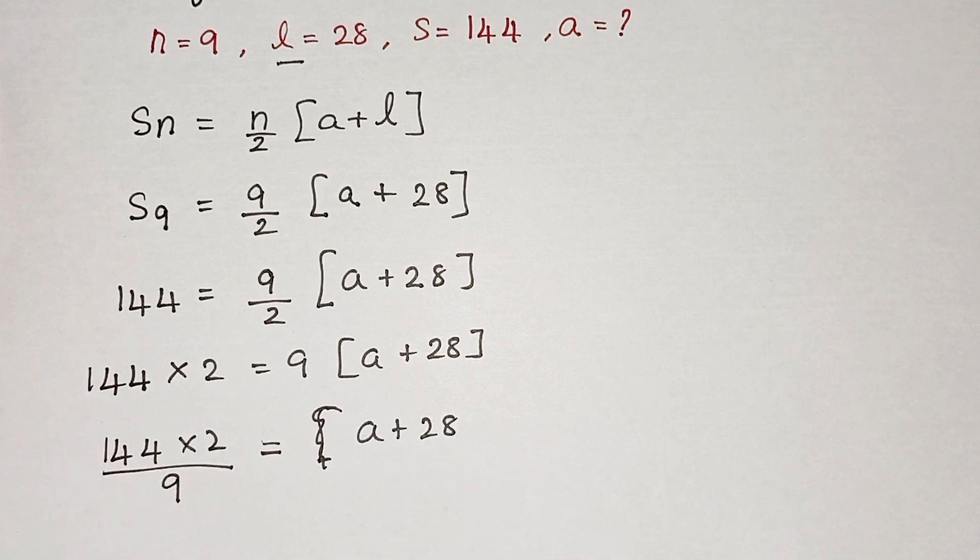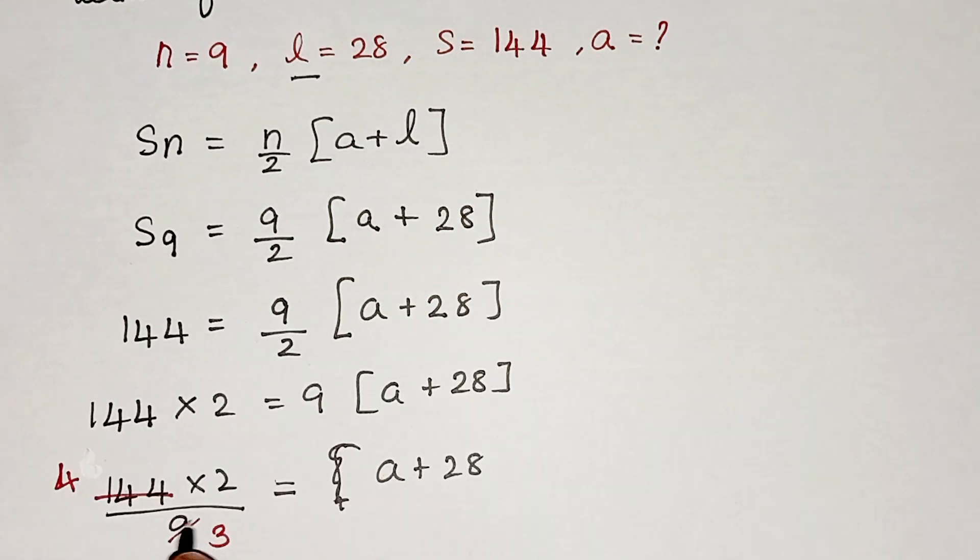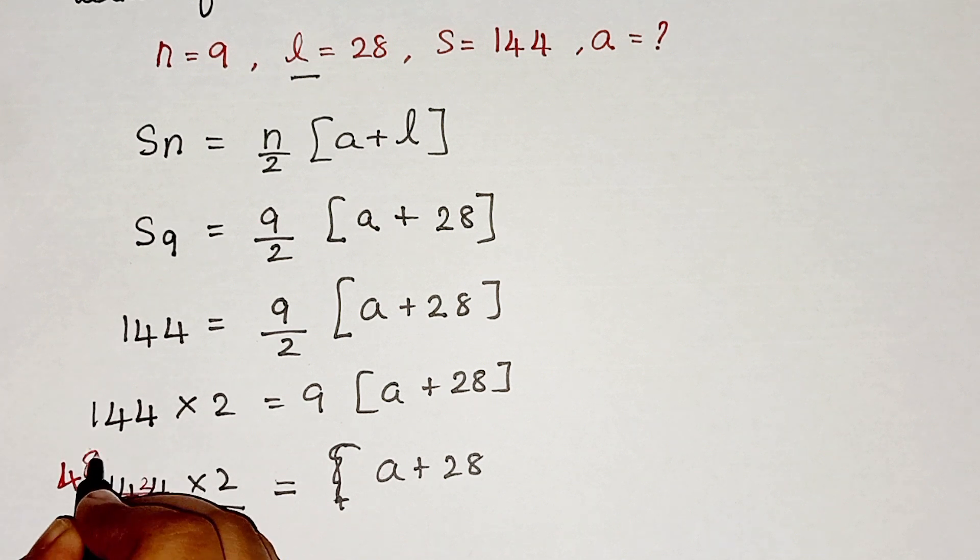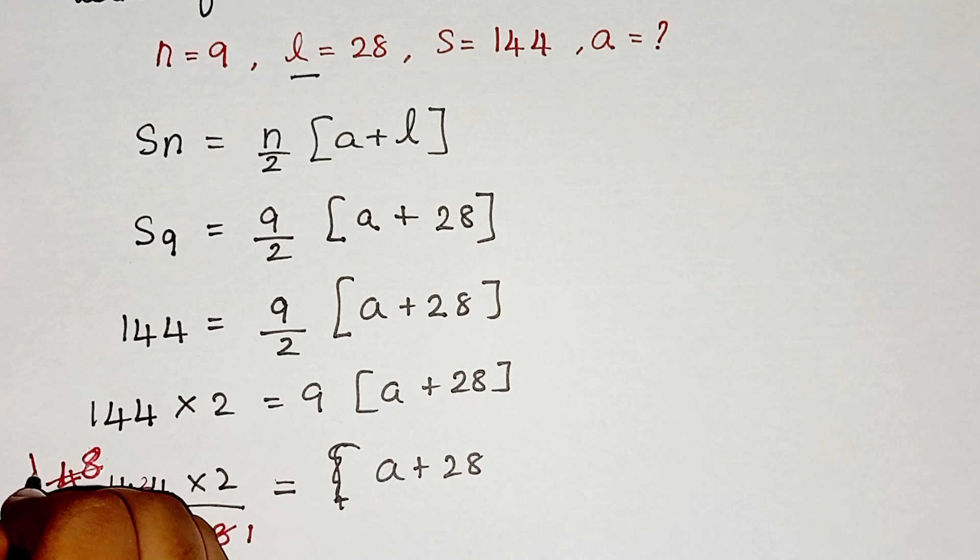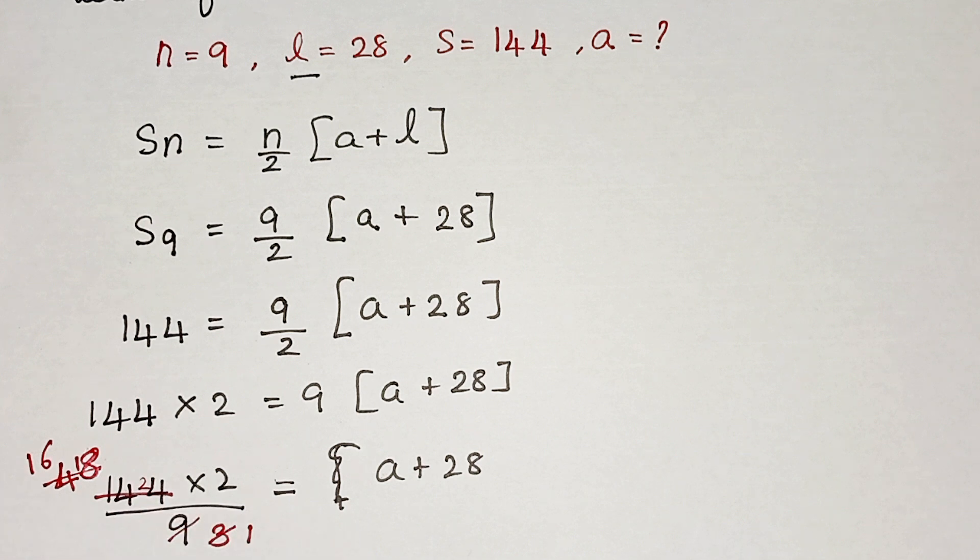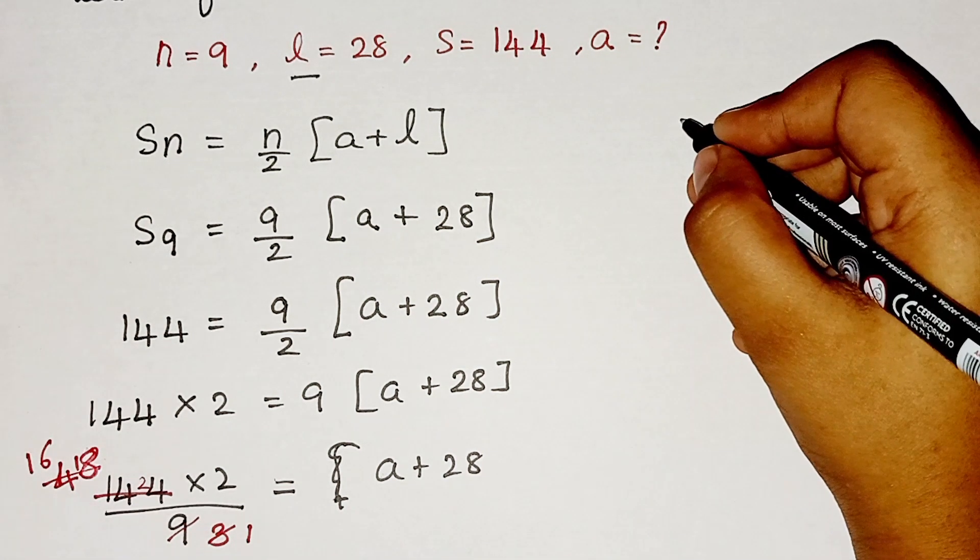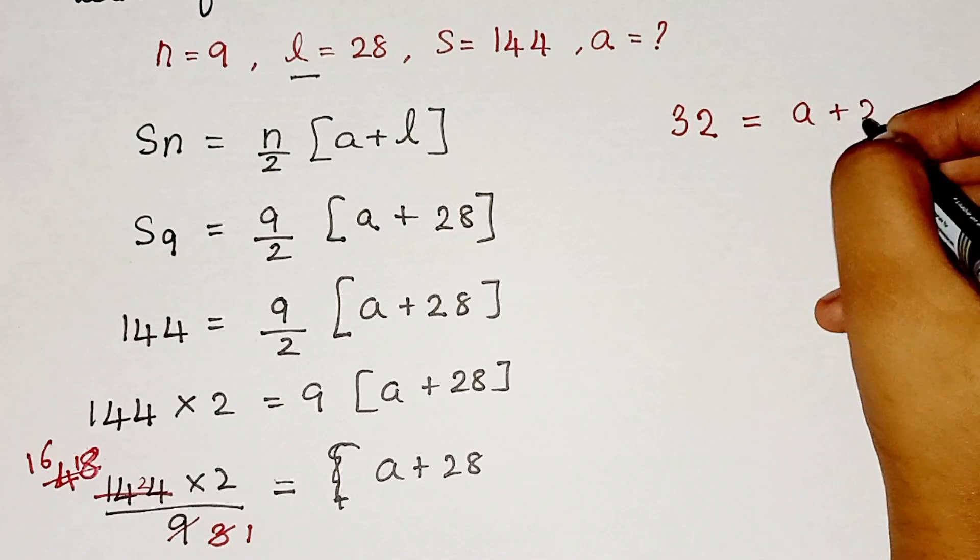So here, now we can cancel the values. When I cancel it in 3 table, 3 threes are 9, and 4 threes are 12, balance 2, 8 threes are 24. Again we can cancel, 1 three is 3 and 1 three is 3, balance 1, and then 6 threes are 18. So now we have 16 × 2. So 16 × 2 is 32 = a + 28.